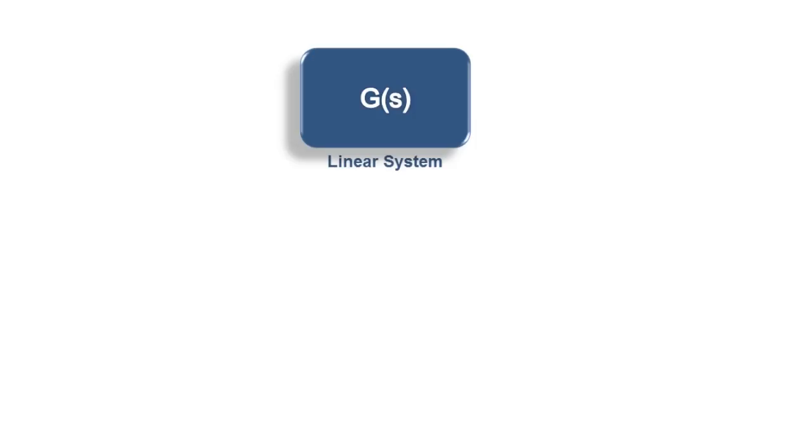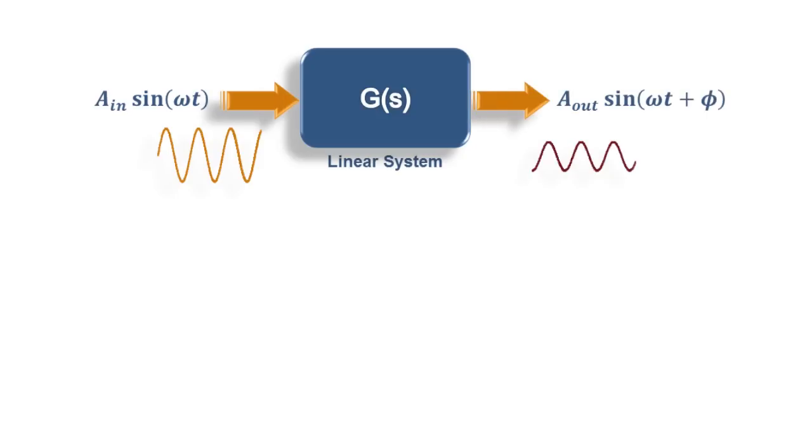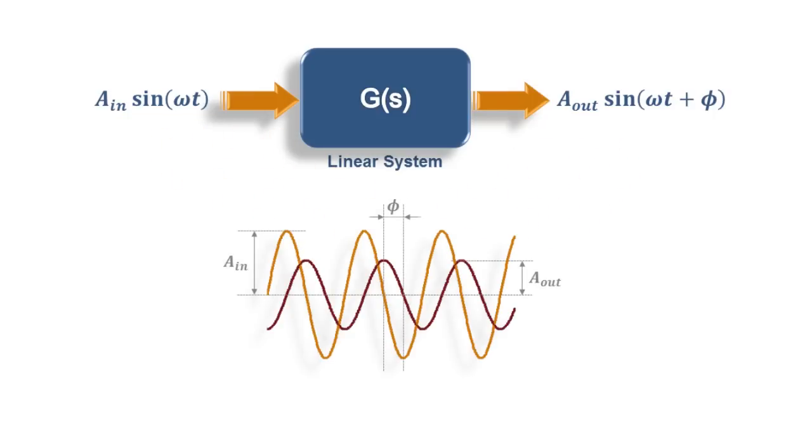By definition, if we feed in a pure sinusoidal tone into a generic linear time invariant system, the output would also be a pure sinusoidal tone. Notice that a linear time invariant system can affect the amplitude of the signal and can introduce a shift in the phase of the sine wave, but it will not alter its fundamental frequency.